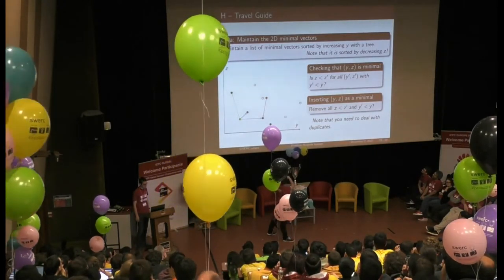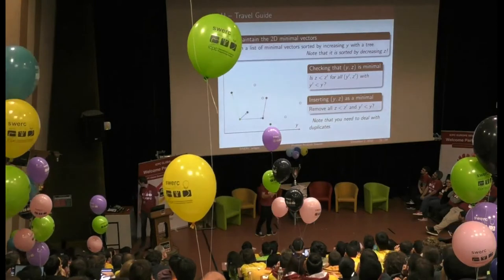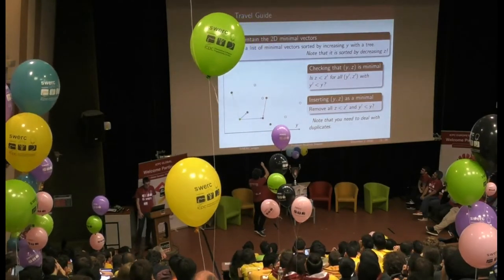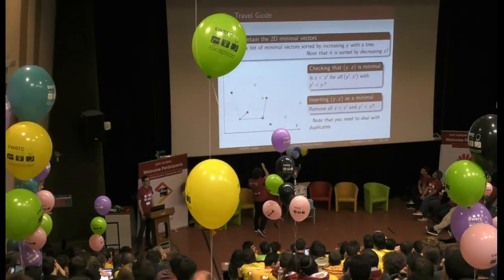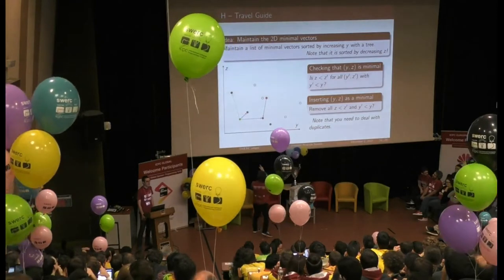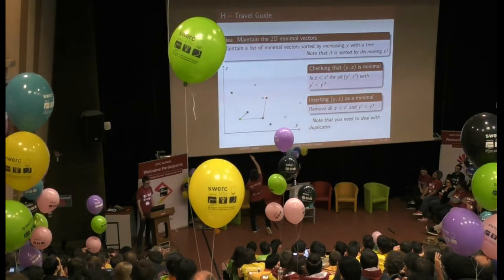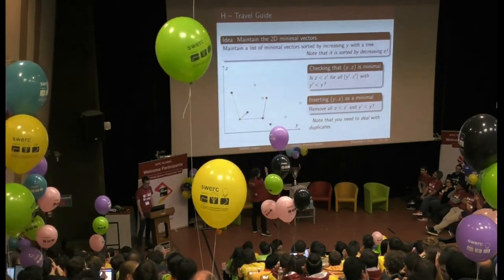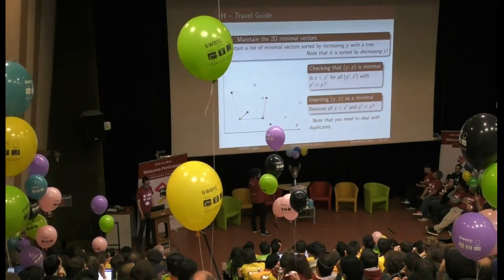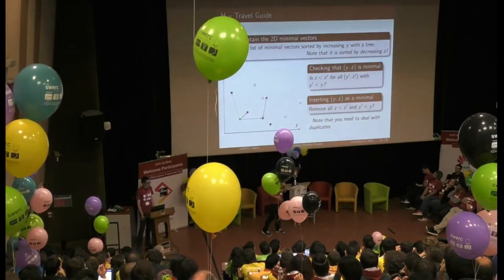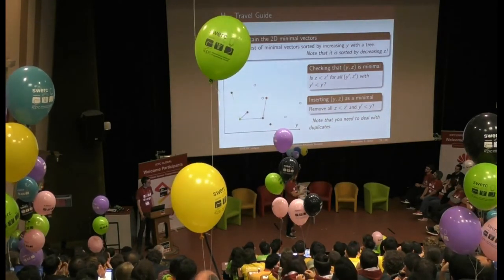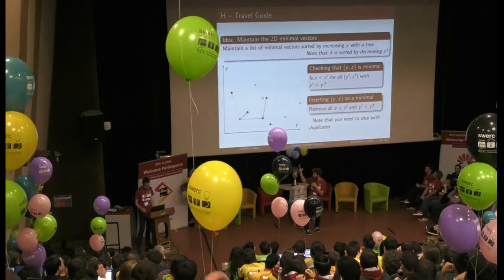You maintain the set of 2D minimal vectors using a sorted list — for example a balanced BST, implemented with a tree map in Java or STL map in C++; in Python you may need to build the tree yourself. To check if a new point is minimal in 2D, look at the point just before it: if that point has a lower coordinate, the new point is not minimal (shown in red). If inserted, it may render subsequent points non-minimal, so remove them.